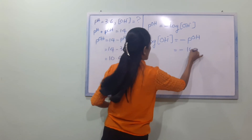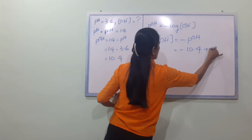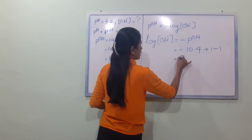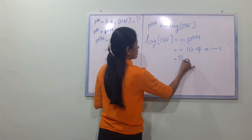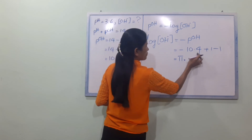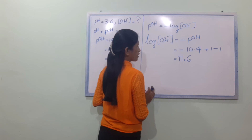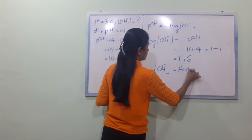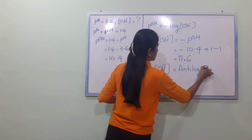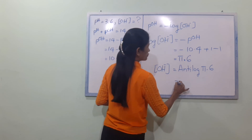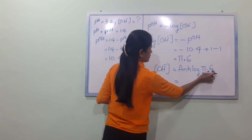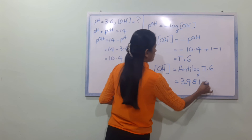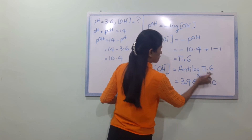So pH equals 10.4. Minus 10 gives minus 11 with 0.6. OH minus ion concentration anti-log of 0.6 equals 3.981 into 10 power minus 11. That is the OH minus concentration.